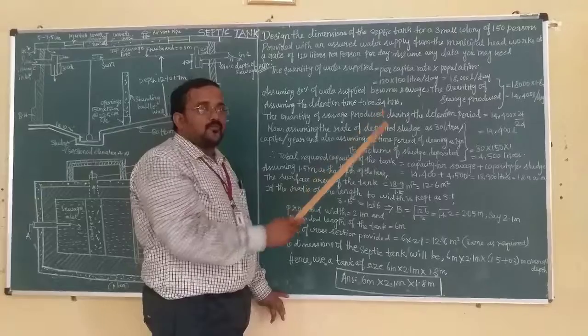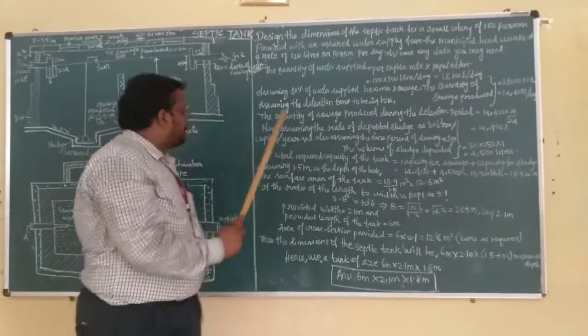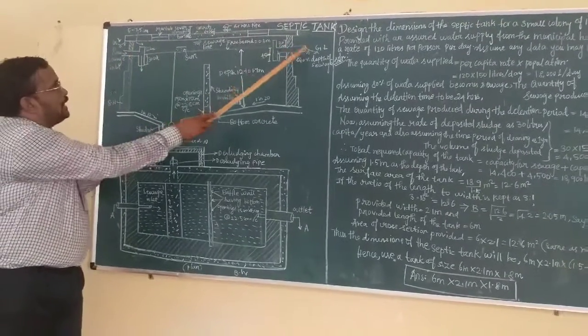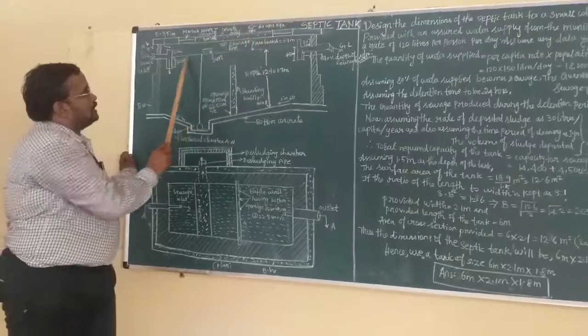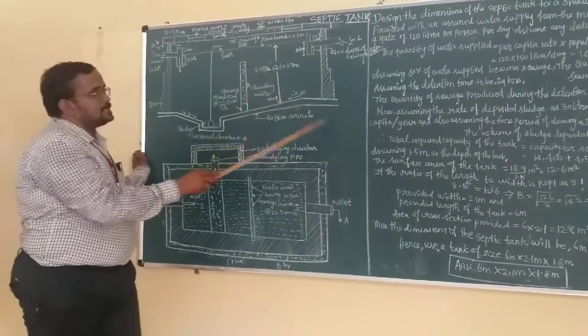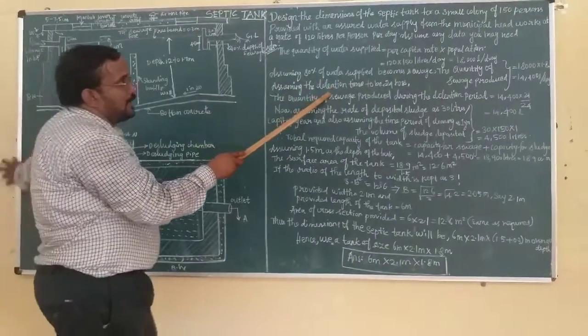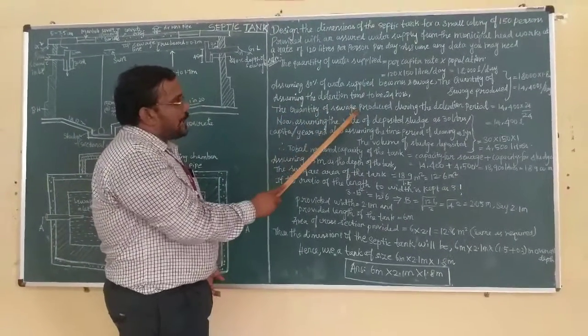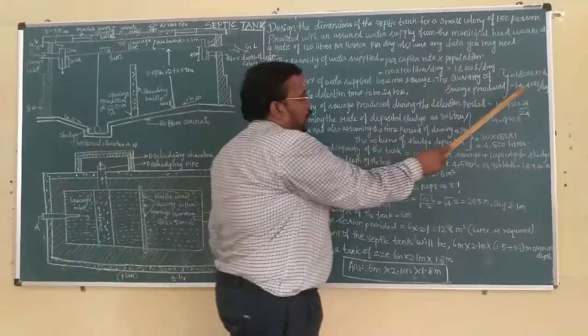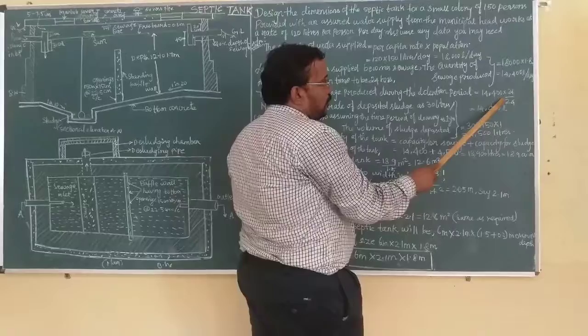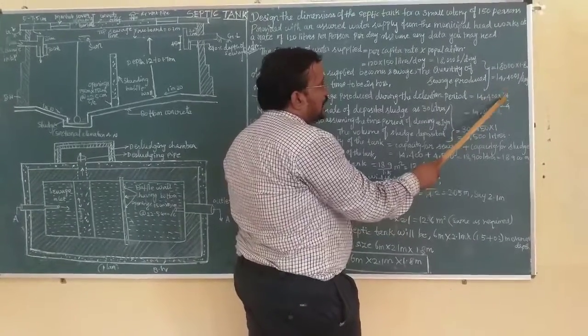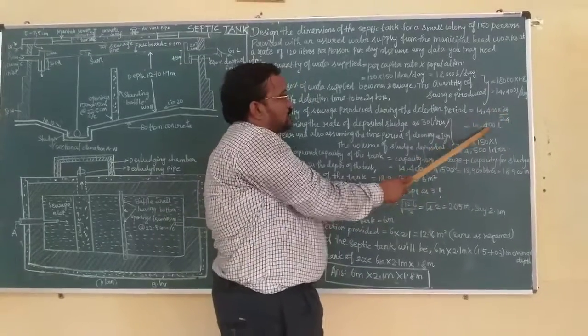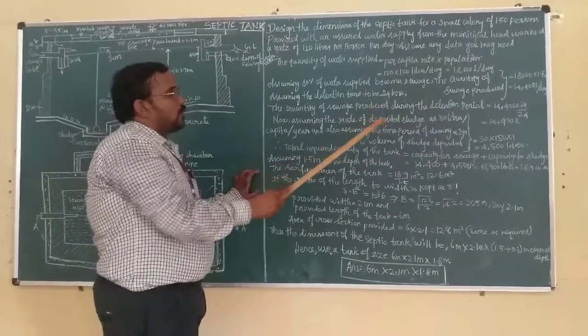Now you assume the retention time will be 24 hours. Retention time means what? Come to the diagram. See the inlet and the outlet. Time taken between the inlet and outlet - the time that sewage stays in the septic tank is the retention time. So retention time may be 24 hours. The quantity of sewage produced during the retention period: for one day, 14,400 liters per day. It stays for one day, hence 14,400 liters - that will be the quantity of sewage produced.